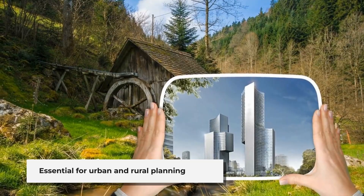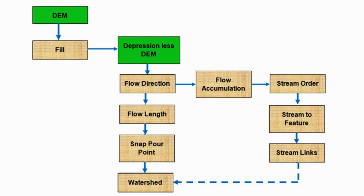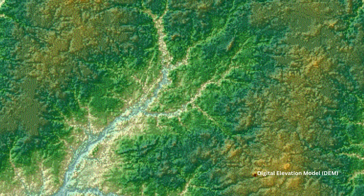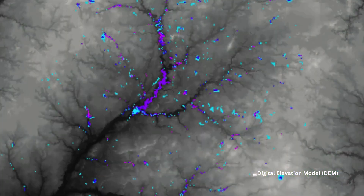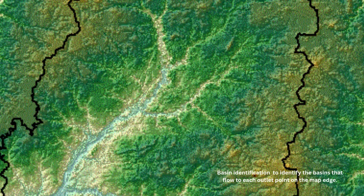How is watershed analysis done using GIS? Thanks to GIS, watershed analysis has become faster, smarter, and more accurate. Here's how it works in simple steps. One: start with a DEM, digital elevation model — this 3D model of the Earth's surface helps us understand terrain. Two: fill sinks in DEM — natural depressions are filled to allow water to flow properly in simulations. Three: flow direction — determines which way water will flow from each cell on the map. Four: flow accumulation — calculates how much water collects at any point; the higher the number, the more runoff it receives.